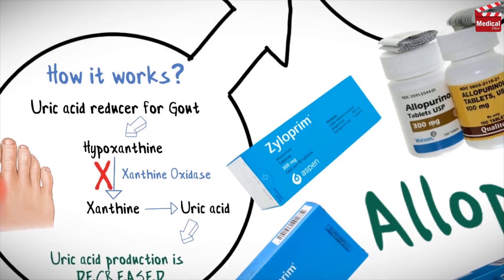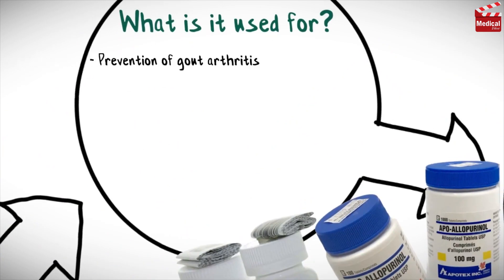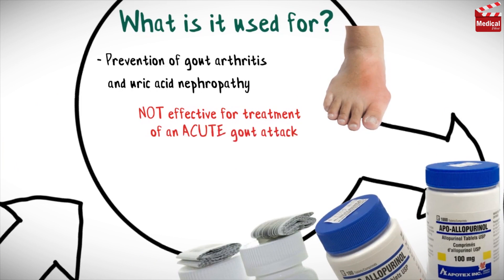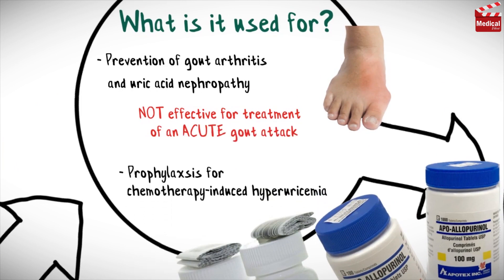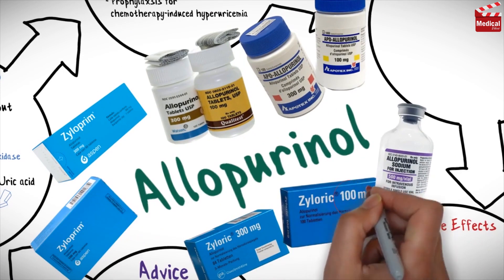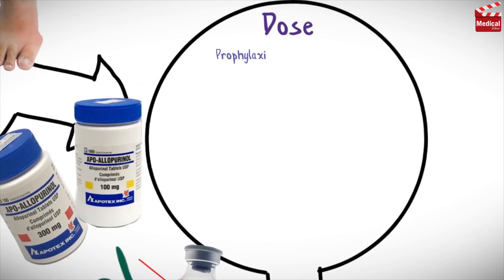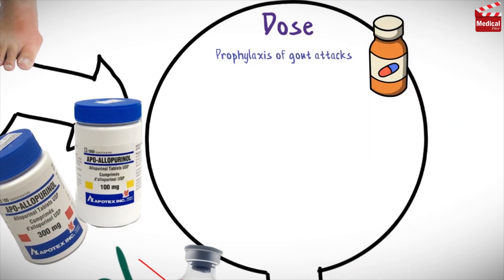The main indication of this drug is prevention of gout arthritis and uric acid nephropathy. Note that it is not effective for treatment of an acute gout attack. It is also used as prophylaxis for chemotherapy-induced hyperuricemia. It is available as 100 and 300 milligram tablets and also as injection.